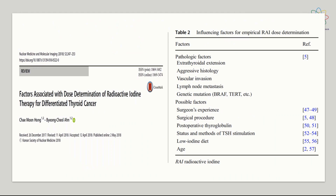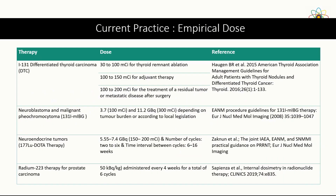There are additional factors based on which dose can be determined, such as pathological factors including extrathyroidal extension, aggressive histology, lymph node metastasis, and genetic mutation. A 2017 paper summarizes factors associated with dose determination for differentiated thyroid cancer. In current empirical practice, fixed doses range from 30–100 mCi of iodine-131 for ablation therapy, 100–200 mCi for residual tumour or metastatic disease after surgery, and 100–300 mCi of iodine-131 MIBG depending on tumour burden and local legislation.